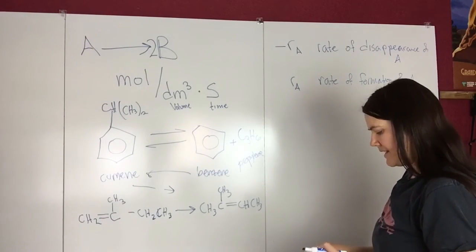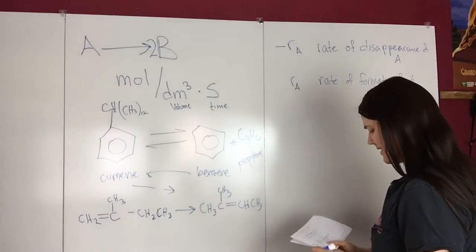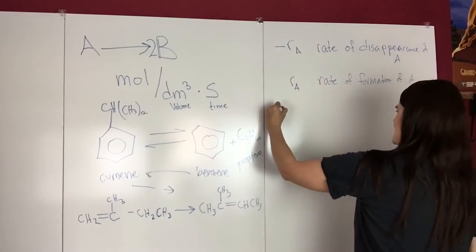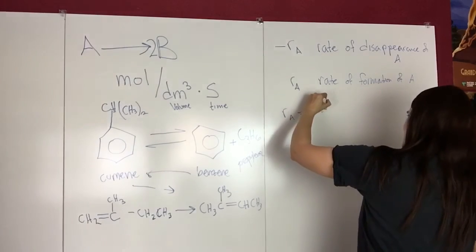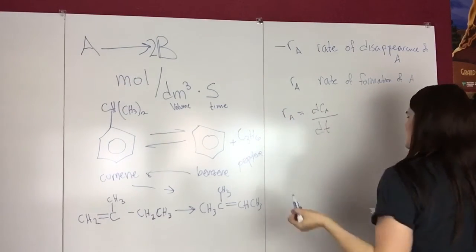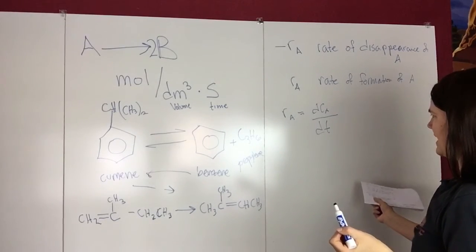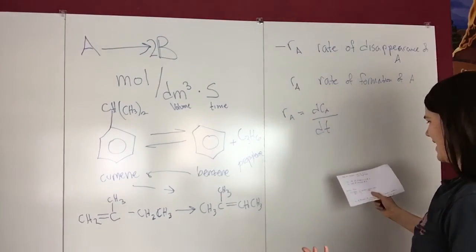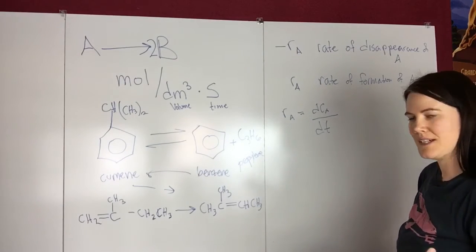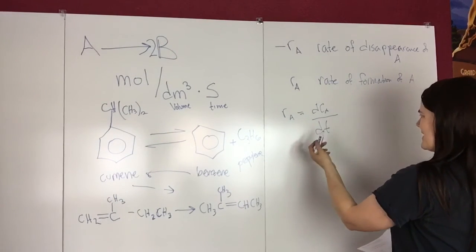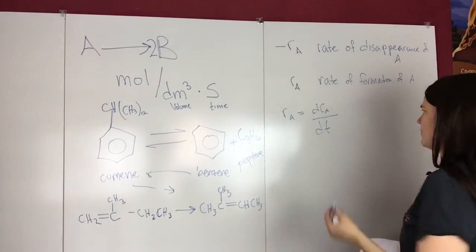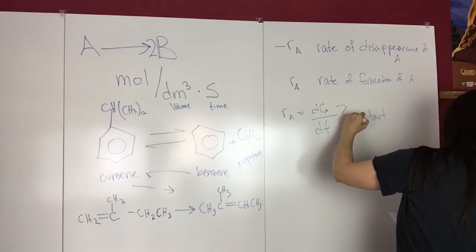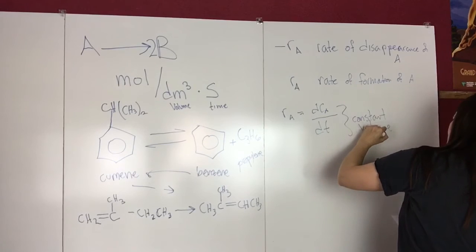The confusion comes in because older texts traditionally wrote the rate equation like this: RA equals dCA/dT, so the rate of A is the change in concentration with time. But this equation is only valid if you have a constant volume batch system. It's not that this is wrong — it's just that it only applies to that one particular case.